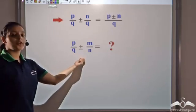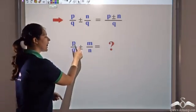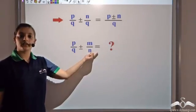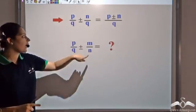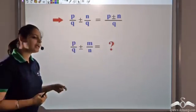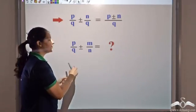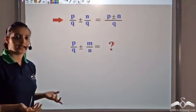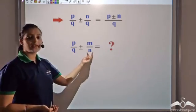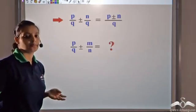Now, what if the denominators are different? How do I add or subtract two rational numbers when the denominator is different? In such a case, since I know how to add and subtract when the denominator is the same, what I will do is change the fractions so that the denominators become the same. Once the denominators are the same, I know how to add and subtract.